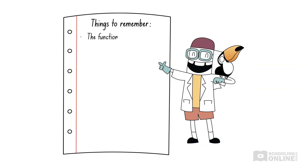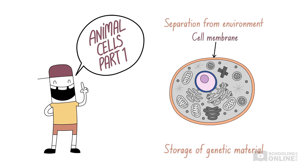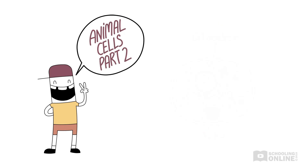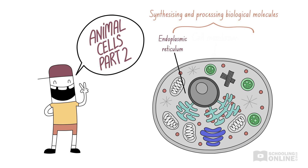Over the next three lessons, we will introduce individual animal cell components and their specific functions. In the HSC biology course, you will study the function of each component in relation to its structure. This lesson will cover the cell membrane, which separates organelles from the external environment, and the nucleus, an organelle involved in the storage of genetic material. In the second lesson, we will focus on organelles responsible for synthesising and processing biological molecules, including the endoplasmic reticulum, ribosomes, Golgi apparatus and lysosomes.